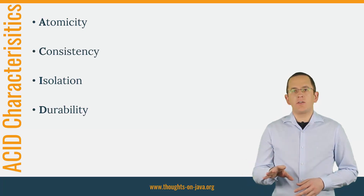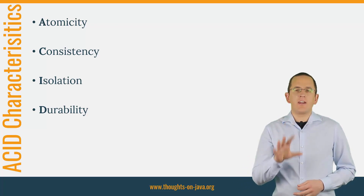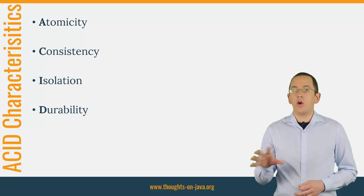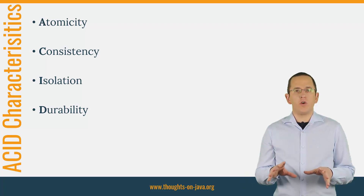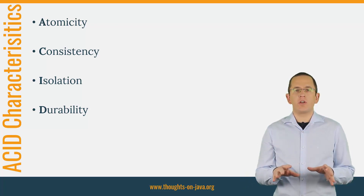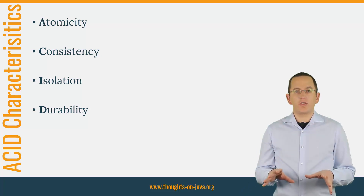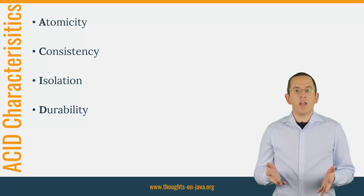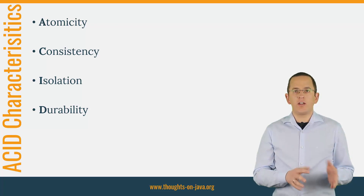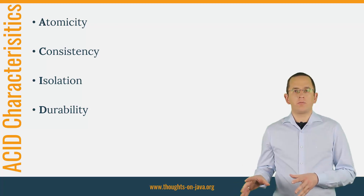Let's take a closer look at all 4 characteristics. Atomicity describes an all-or-nothing principle. Either all operations performed within the transaction get executed, or none of them. That means if your transaction gets committed successfully, you can be sure that all operations got performed. It also enables you to abort a transaction and discard all operations that you already performed if an error occurs.